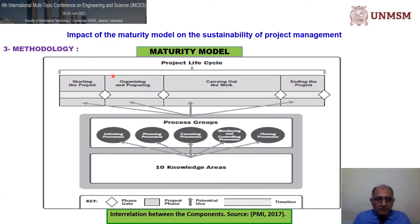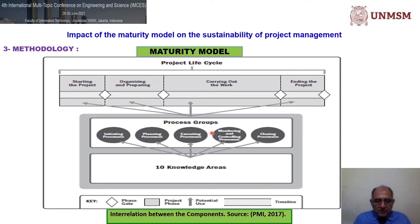The Project Life Cycle consists of: Starting the project, organizing and preparing, carrying out the work, and ending the process. Process groups include: Initiating, Planning, Executing, Monitoring and Controlling, and Closing processes, along with the knowledge areas.